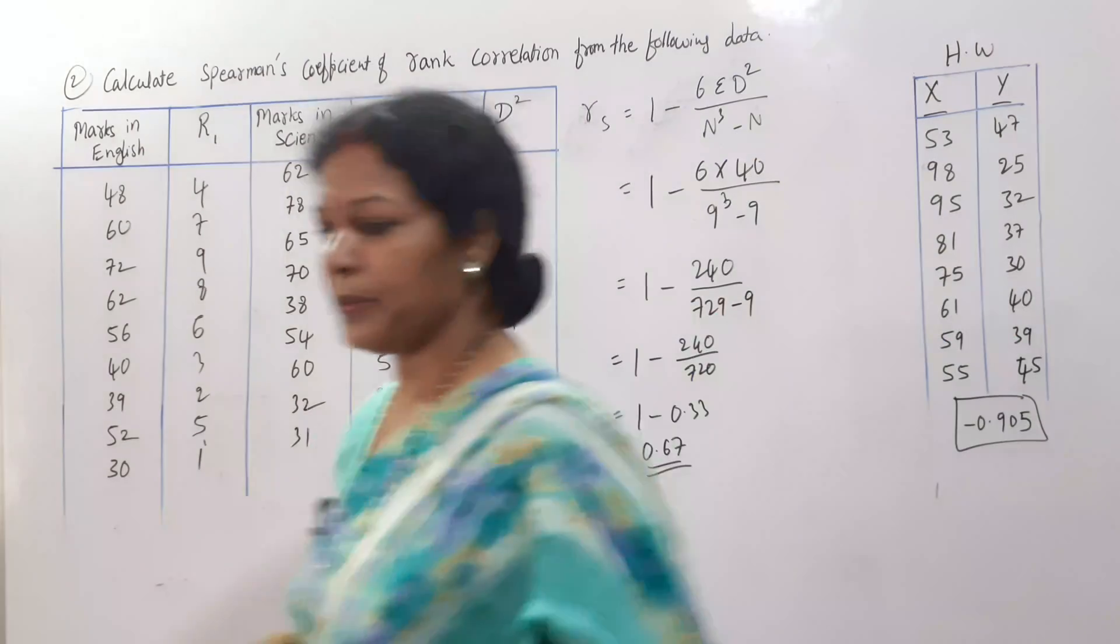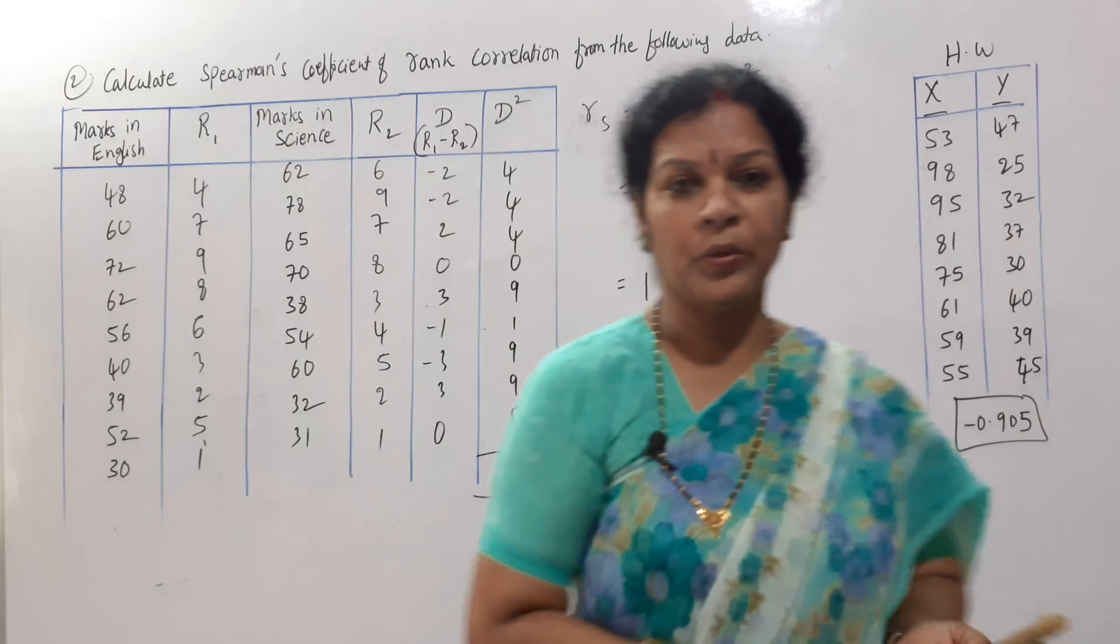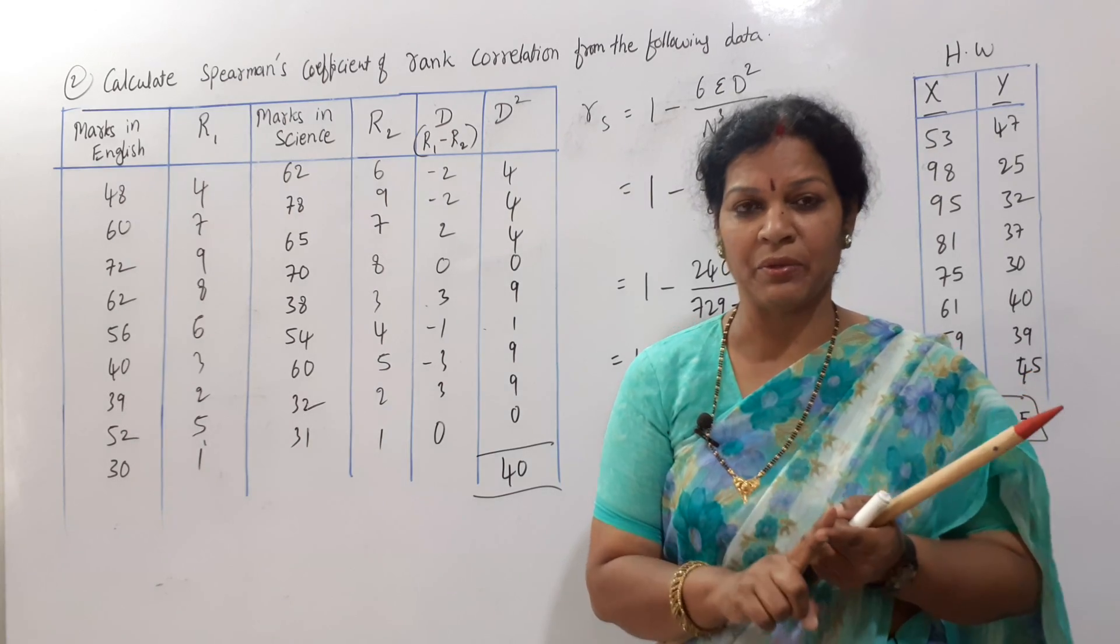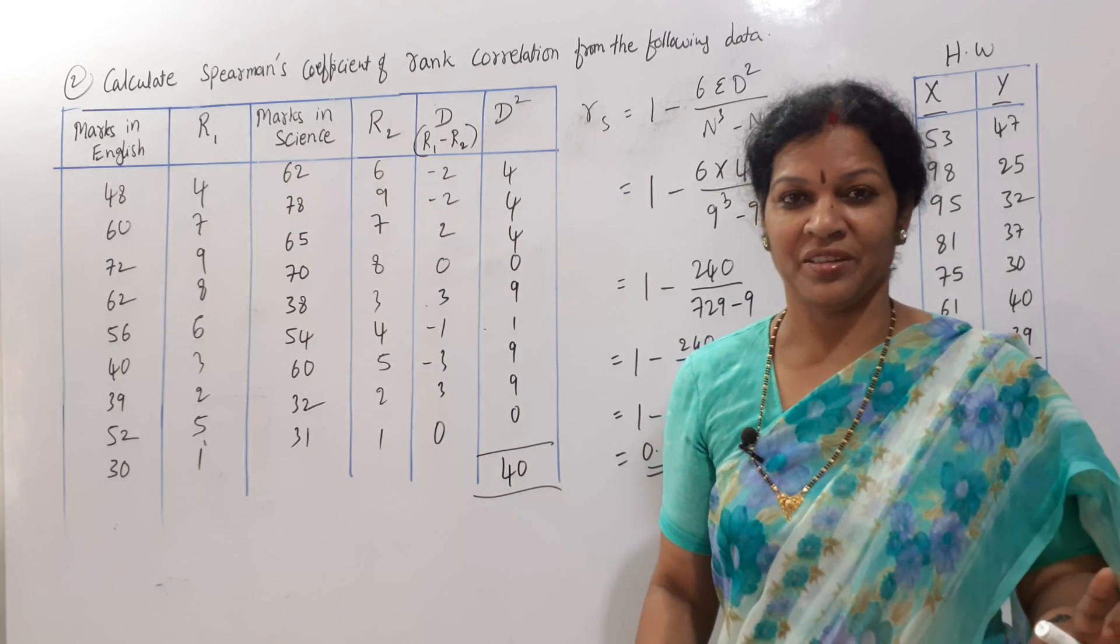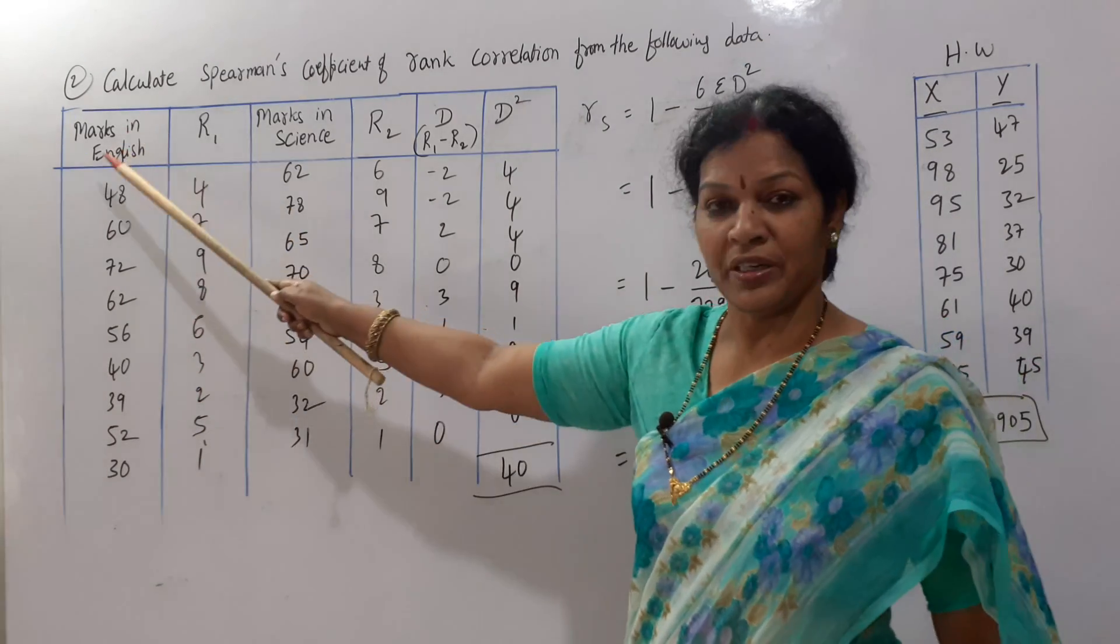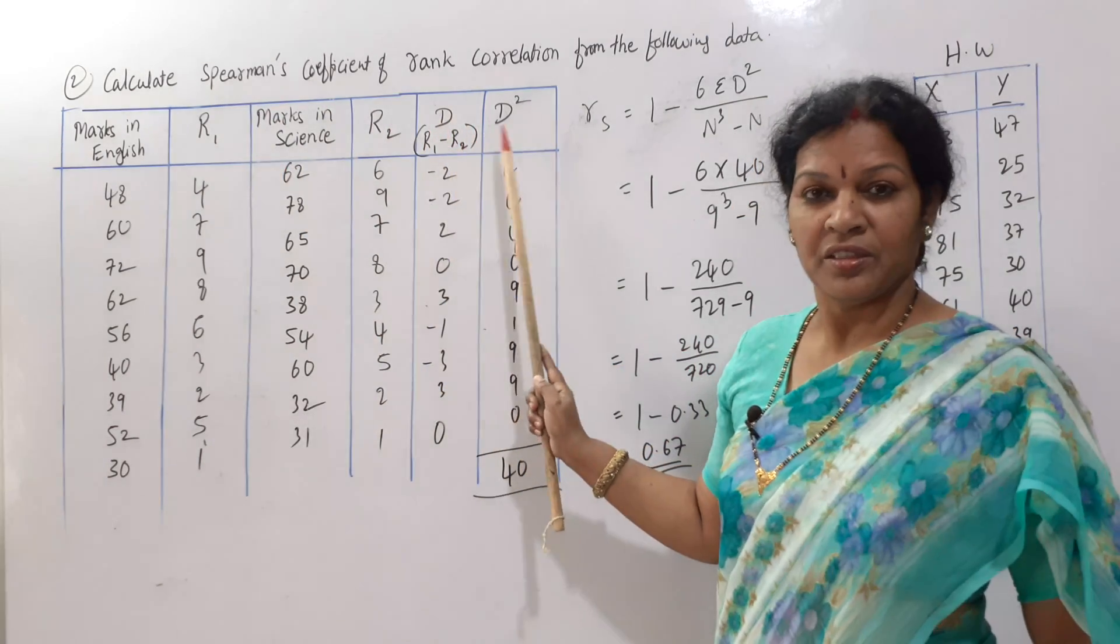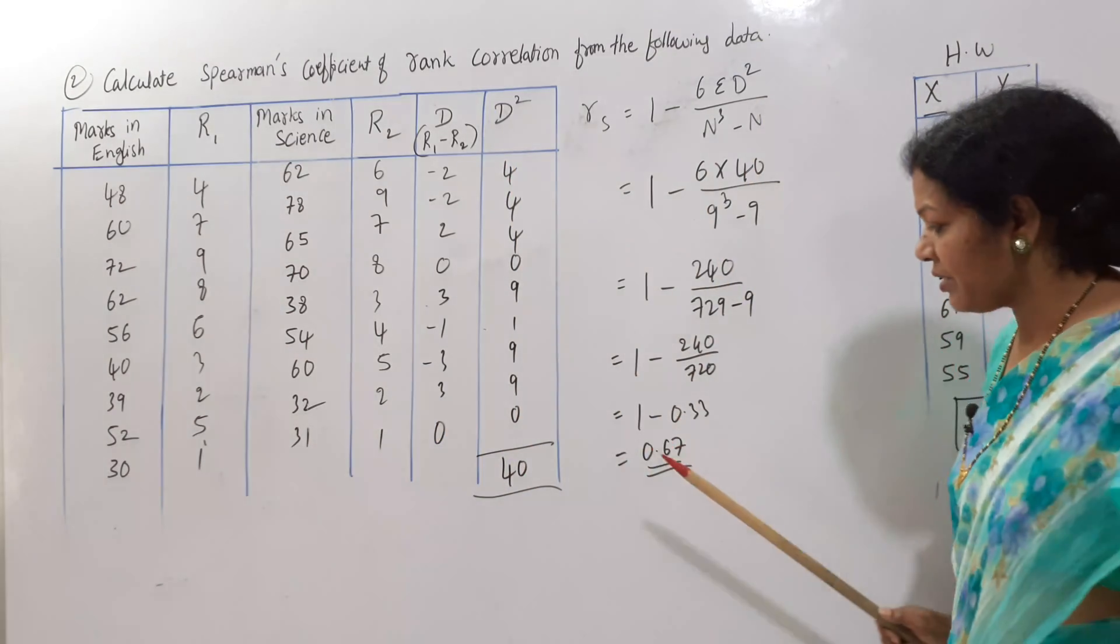There is nothing to worry about this rank correlation. First of all, we have to see ranks are given or not. In this problem, simply they said marks means ranks are not given. How many students are there? 9 students. What we have done? First, we have given the ranks. R1 for English, R2 for Science. Then, as per the formula, we need D square. D square means first we have to calculate the D. R1 minus R2 is D. D square we have done. Total of this D square is 40. Applied in the formula. That is it. We got the answer of 0.67. Am I clear?